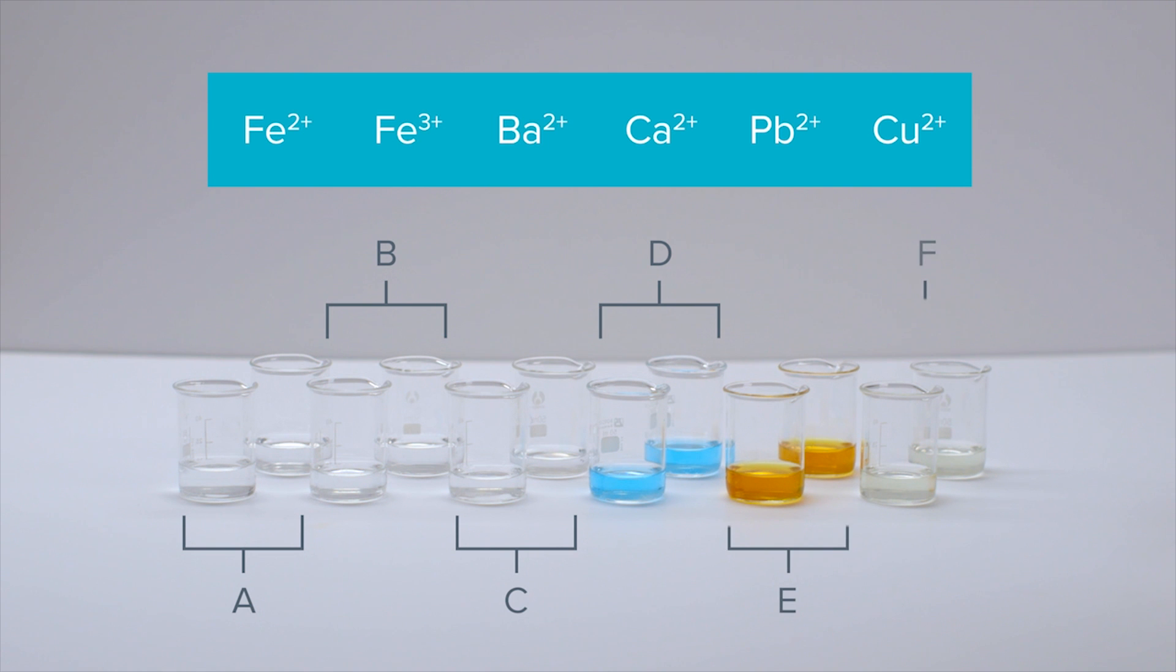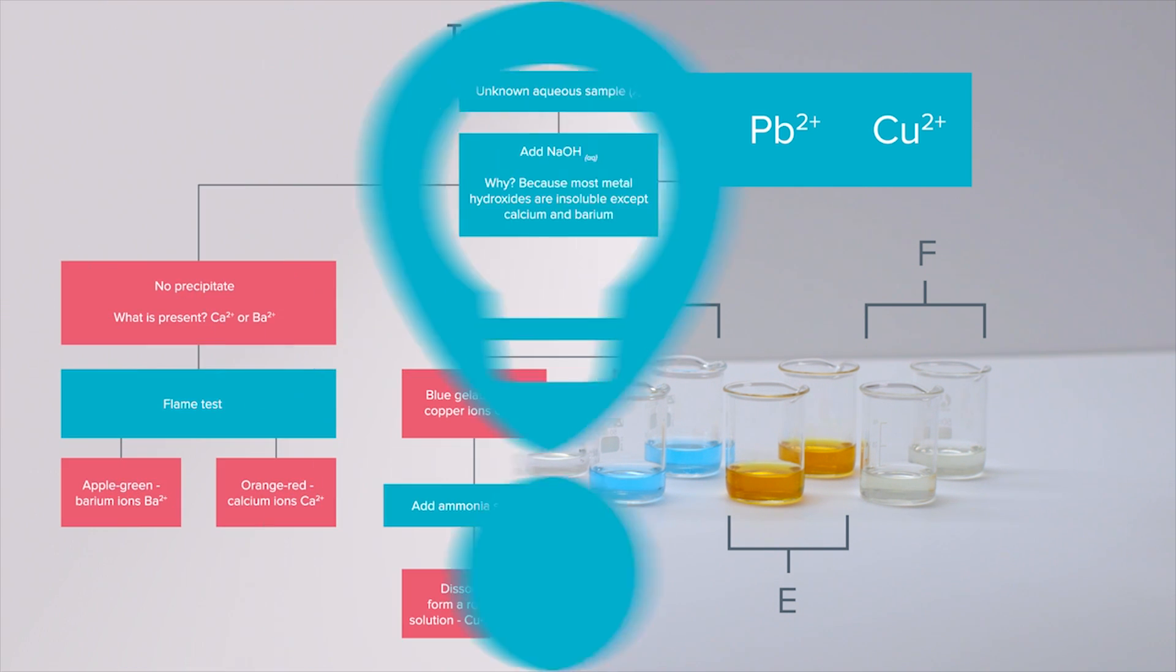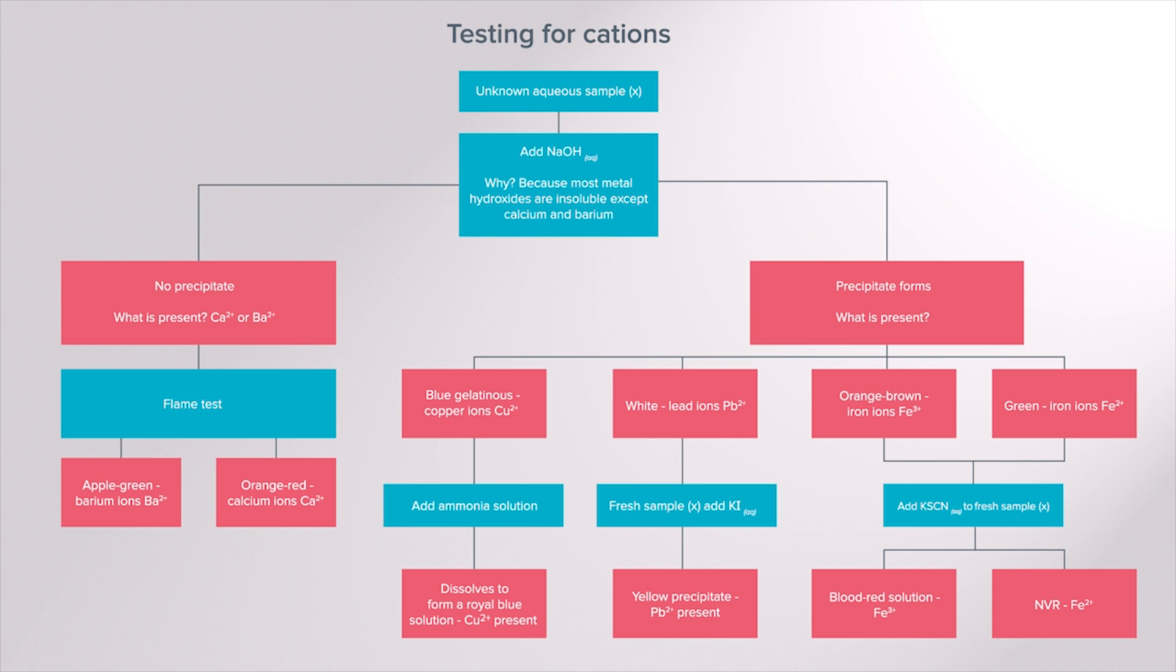Iron, barium, calcium, lead and copper ions present in a sample need to be determined by using a series of tests. A simple sequence of conducting the tests is shown in the flowchart.